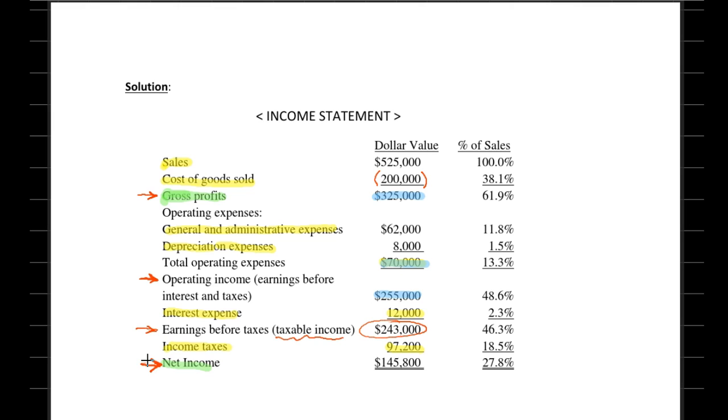We restructured the givens in the problem so that we can have a better understanding of how the income and expense items of the firm are. We started with sales, we subtracted cost of goods sold from sales to come across gross profit, then we deducted further expenses such as general and administrative expenses and depreciation expenses to come across our second important item, which is operating income.